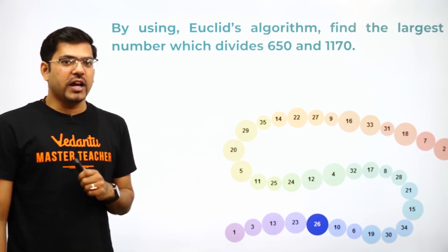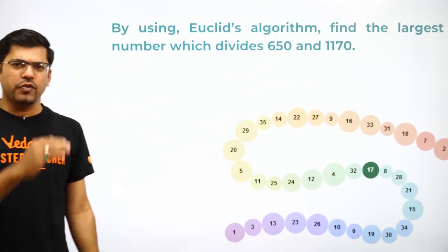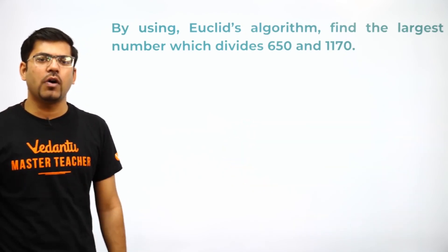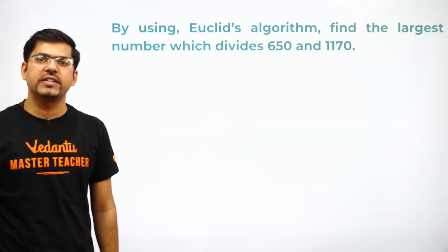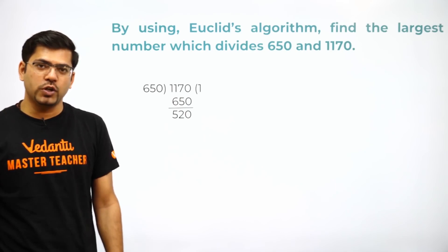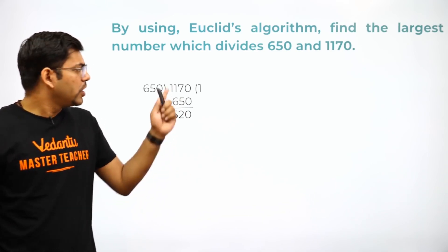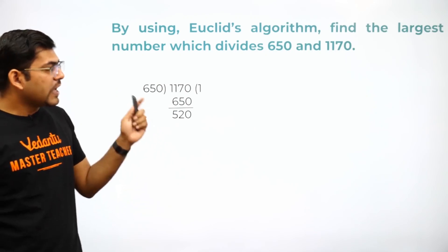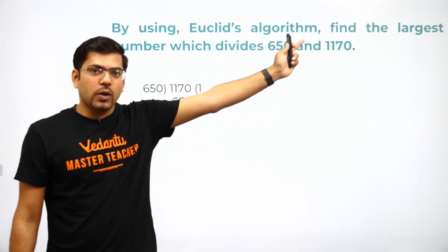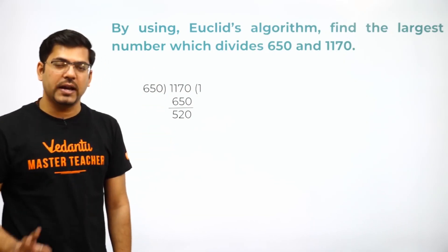You have to find a number which divides both the numbers — this means you have to find the HCF of these numbers. So how are you going to find the HCF? The first step in the long division method would begin like this. If the question specifies Euclid's algorithm, you should go with the long division method.